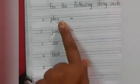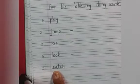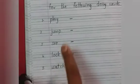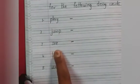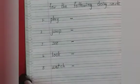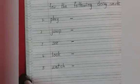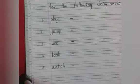First bit is: write the past tense form for the following doing words. Some doing words are given — we have to write them in the past tense form: play, jump, see, look, watch. So you all know how to write this. This is also homework for you. Now you have to learn on your own, children.